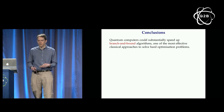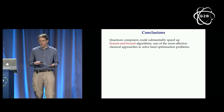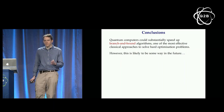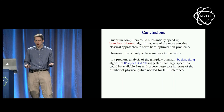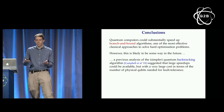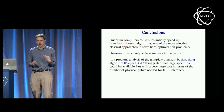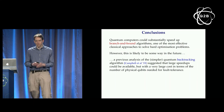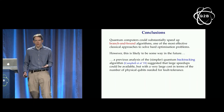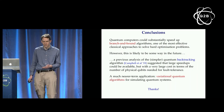To conclude: we think quantum computers might be able to substantially speed up branch and bound algorithms, which are really one of the workhorses of combinatorial optimization. This is well into the fault-tolerant regime and still some way off — implementing the backtracking algorithm on a fault-tolerant quantum computer would require a lot of physical qubits for error correction, making the cost gigantic. To make this practical, we need to bring these numbers down a lot, though there's a lot of scope for interesting theoretical developments. A much nearer-term thing is variational quantum algorithms for simulating quantum systems. Thank you very much.